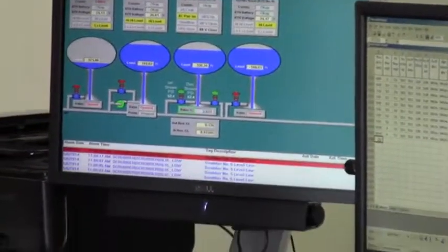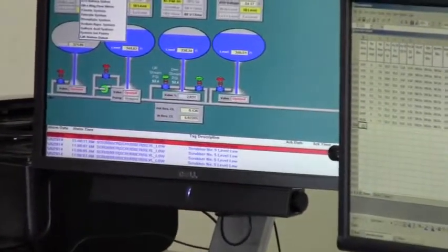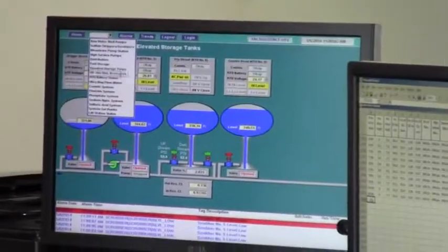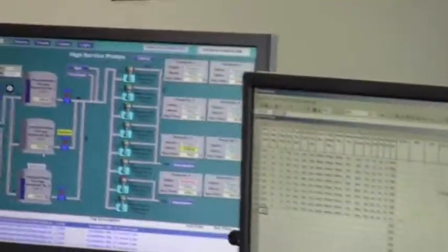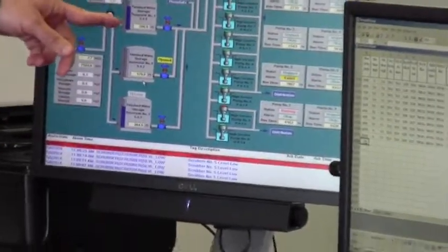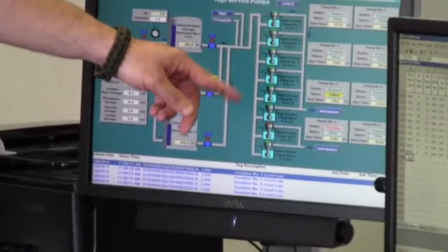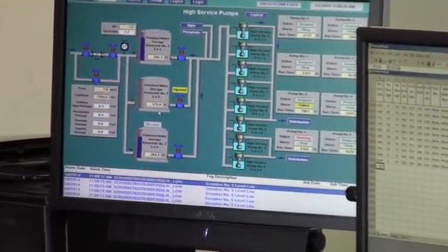As you go through this, the ground storage tanks where I was talking about hold 1.5 MGD apiece. Those are there one, two, and three. Right now we're running number one. It actually shows your high service pumps. Right now we're running number seven high service pump.